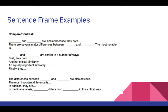Here is what sentence frames actually look like. If we're doing a compare and contrast, the frame would be: 'Blank and blank are similar because they both...' where the student fills in how the two subjects are similar. And then: 'There are several major differences between blank and blank. The most notable is...' where the student provides that most notable difference. When we use these sentence frames, it helps students create order and make sense in their writing.